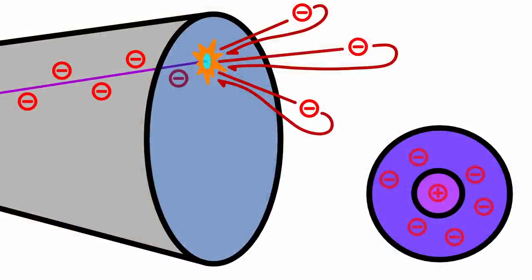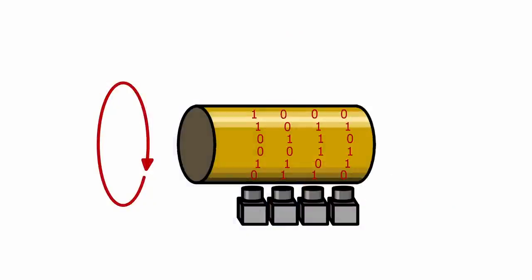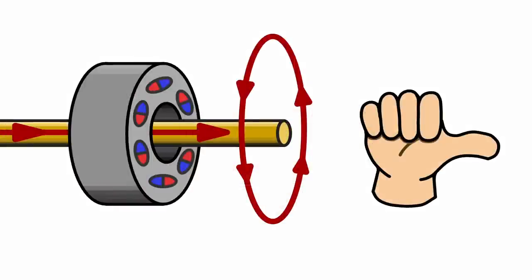Hello and welcome back. In the previous episode we took a look at three different types of memories: electrostatic or Williams tube memory, rotating drum memory, and magnetic core memory.